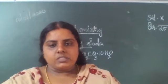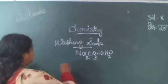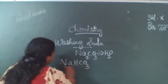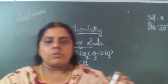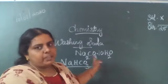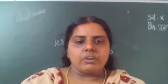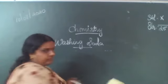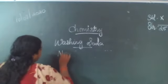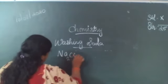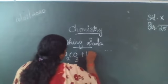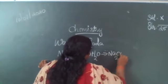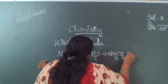To obtain washing soda: heating of baking soda, whose formula is NaHCO3, gives sodium carbonate, that is Na2CO3. The recrystallization of sodium carbonate then forms washing soda: Na2CO3 + 10H2O gives Na2CO3·10H2O.